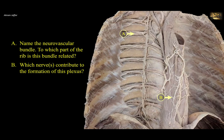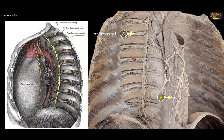Name the neurovascular bundle, to which part of the rib is this bundle related, and which nerves contribute to the formation of the plexus. The neurovascular bundle A is the intercostal neurovascular bundle, formed by a vein, artery, and nerve. Although there is much shrinkage in the specimen preparation, the neurovascular bundle is related to the lower border of the rib, and more anteriorly it is protected by the costal groove at the lower border of the rib.